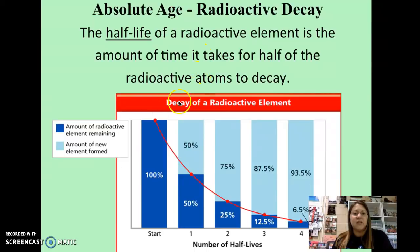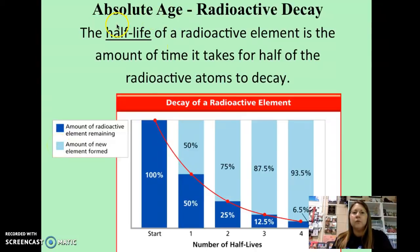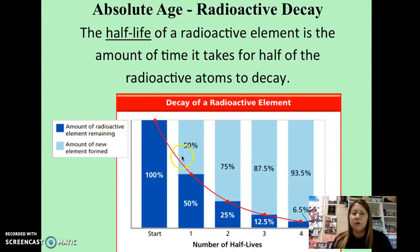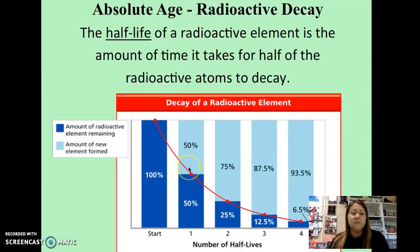There's a graph here looking at the decay of a radioactive element. The blue section represents the amount of the radioactive element you have, and the light blue is the amount of the new element that is formed as that radioactive element is decaying and breaking down. The half-life means 50%. We start with 100% of the radioactive element, and after one half-life, we end up with only 50% of the radioactive element remaining. The other 50% transitioned — you had energy emissions of those radioactive particles, so you end up with 50% of the new element formed.